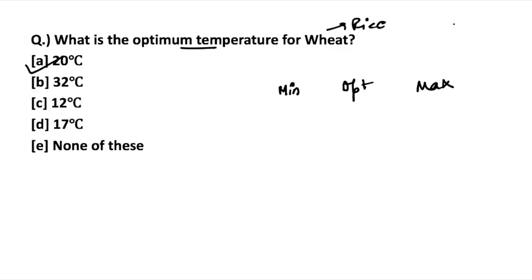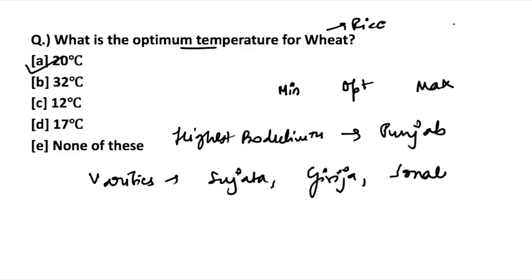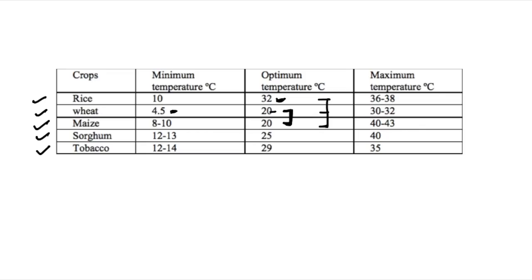Now let's look at some important features of wheat. The highest productive state in India for wheat is Punjab — this is very important and a question might come on it. The various varieties of wheat include Sujata, Girija, Sonalika, Kalyan Sona, and Shailja. Another very important feature is that wheat is very sensitive to insufficient nitrogen. Keep in mind: nitrogen sensitivity, the highest productive state, and the various varieties. You can take a screenshot of the table to remember the optimum temperatures.